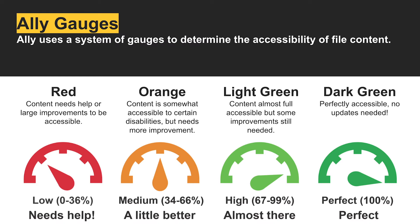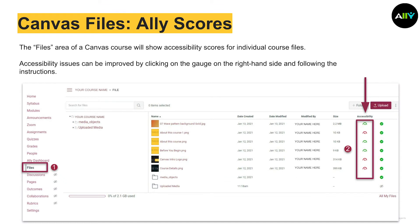Ally shows users different color gauges to determine how accessible a file and its content is. A red gauge indicates that file content needs help or improvements to be more accessible. An orange gauge means the content is accessible to some disabilities but not all, so improvements need to be made. A light green gauge means the content is almost fully accessible to all disabilities, but some improvements can still be made. Finally, a dark green gauge signifies that the file content is perfectly accessible and no changes are needed. Users can access the accessibility scores of their documents by going to the Files section in their left Canvas course navigation menu, where the Ally color gauges will appear on the right-hand side of the screen under Accessibility.